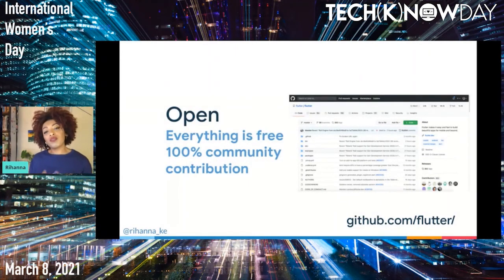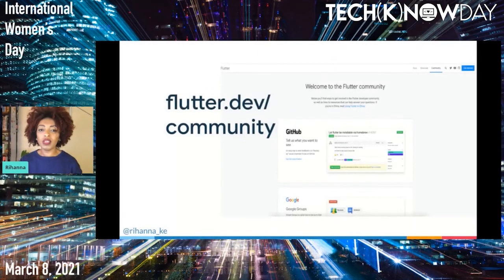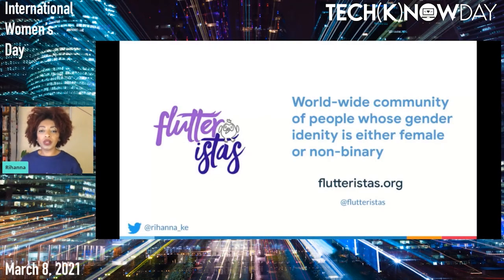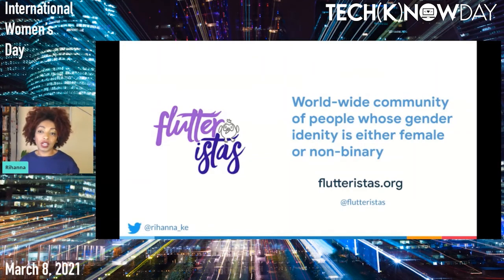One other thing that makes Flutter awesome is that it is open source and has great support from the online community. If you go to flutter.dev/community, you'll find different links and groups. You can find ways to get involved within the Flutter developer community as well as links to resources that can help answer any of your questions and doubts. Speaking of community, check out the Flutteristas — a worldwide community of people whose gender identity is female or non-binary and who have interest in Flutter. We have a coming Flutter conference at the end of March. Check out details on flutteristas.org, or contact me or @Flutteristas on Twitter.